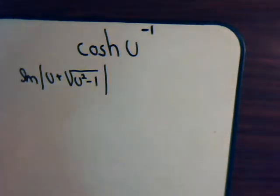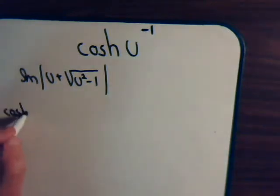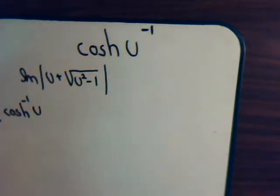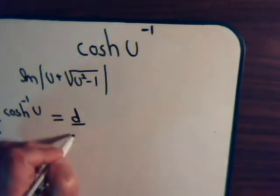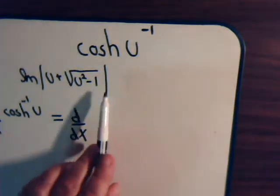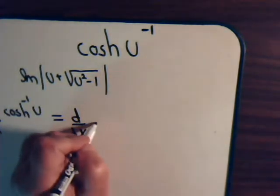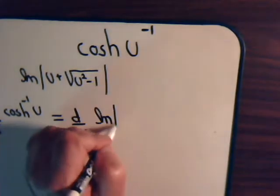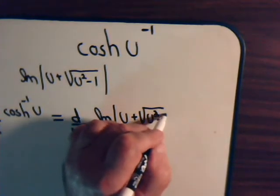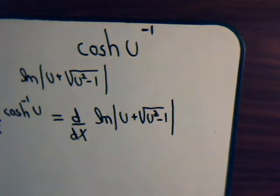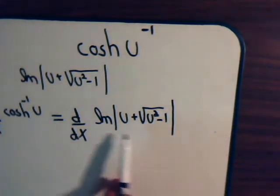So if we want to take the derivative of the inverse hyperbolic cosine of u with respect to x, that is the same thing as taking the derivative with respect to x of this logarithmic function. So let's go ahead and take this derivative.